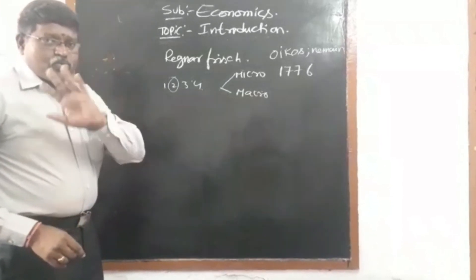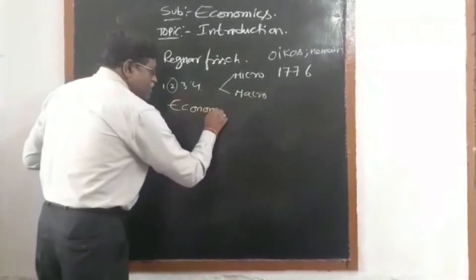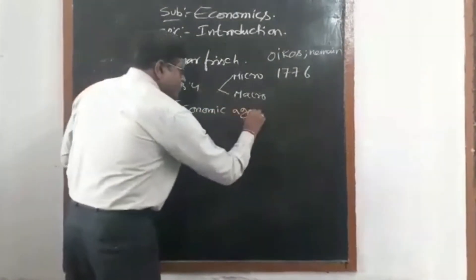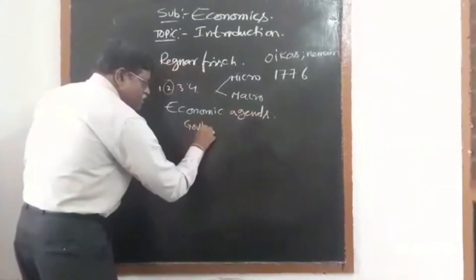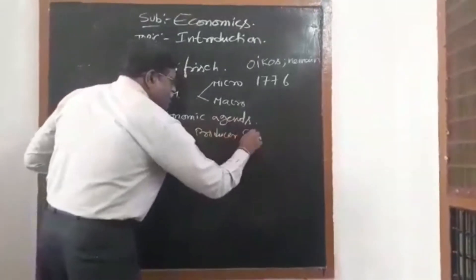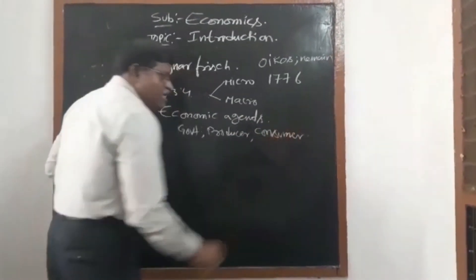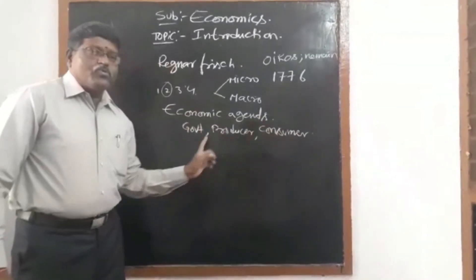We'll discuss one more point: economic agents. Economic agents are government, producer, and consumer. These are the three main economic agents.